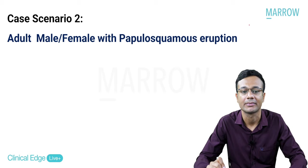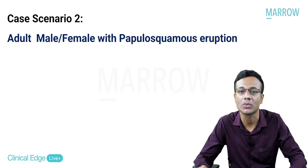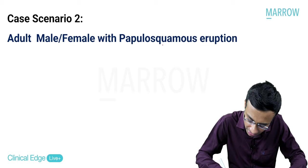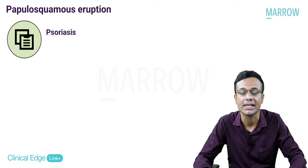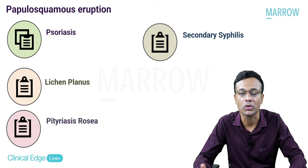Second case scenario: an adult presenting with a papulosquamous eruption. Papulosquamous means papules and plaques with scales. When papulosquamous lesions are mentioned in the exam, five important differential diagnoses to consider: number one, psoriasis; number two, lichen planus; number three, pityriasis rosea; number four, secondary syphilis; and number five, atopic eczema.